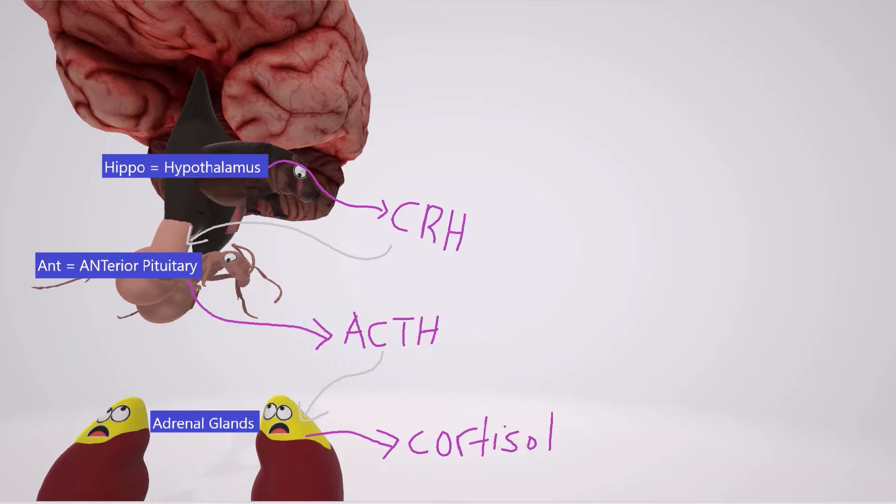Now let's talk about the dexamethasone suppression test. This test is done to diagnose Cushing syndrome — it tells us if there's excess cortisol and where the extra cortisol is coming from. First we give the low dose test, which is when 1 mg of dexamethasone is given.